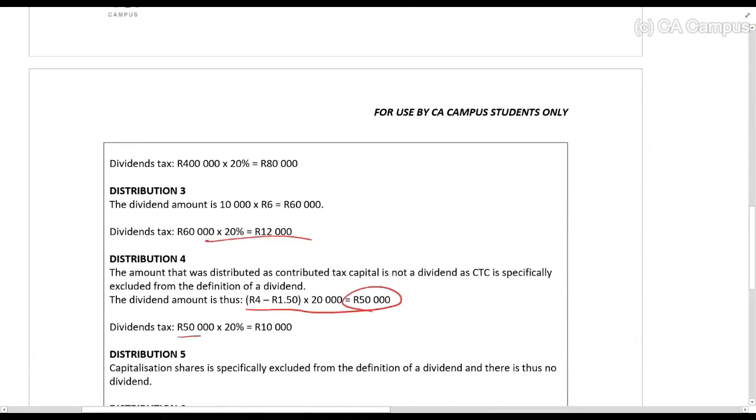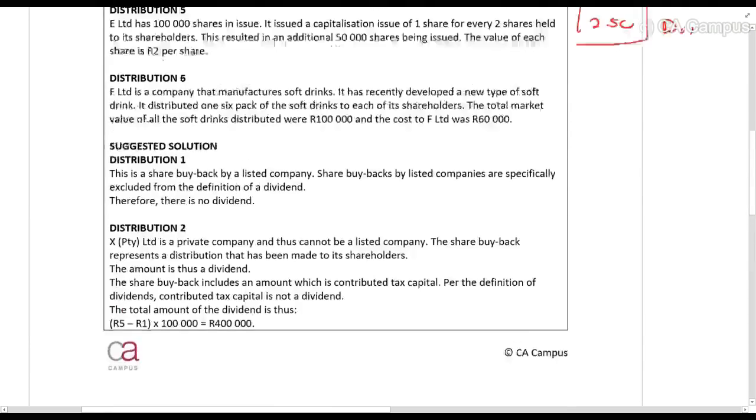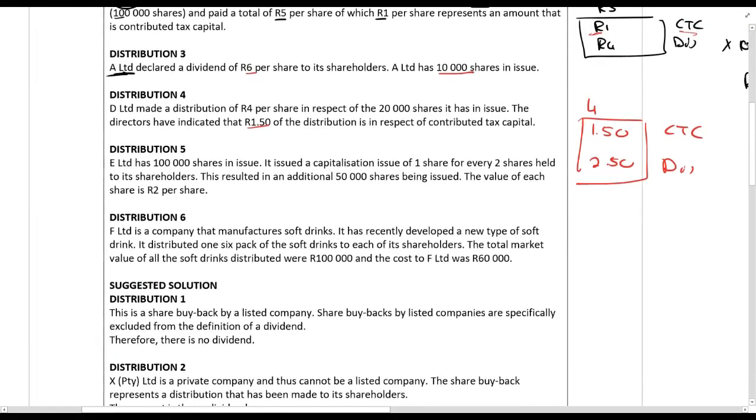Distribution 5: E Ltd has 100,000 shares in issue. It issued a capitalization issue of 1 share for every 2 shares held to shareholders. This resulted in an additional 50,000 shares being issued. The value of each share is 2R per share, so they debited retained earnings and credited capital with 100,000 rands.